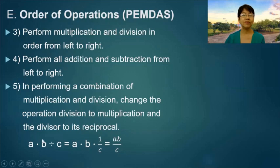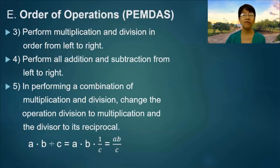So if we have multiplication and then division, we change the division operation to multiplication and get the reciprocal of C. The answer is A times B over C.